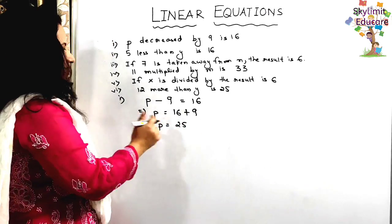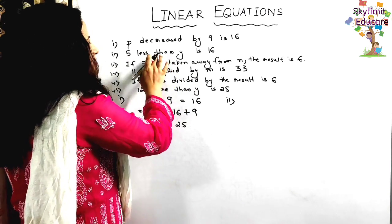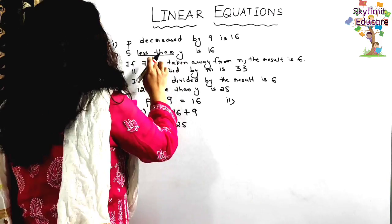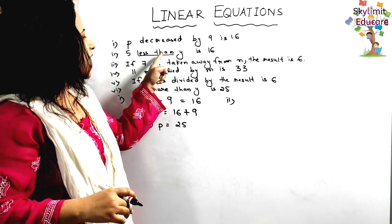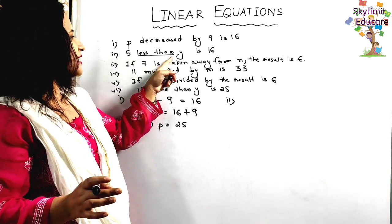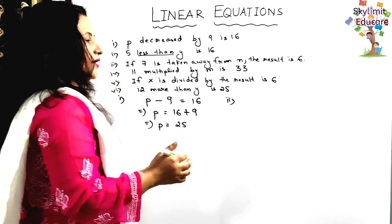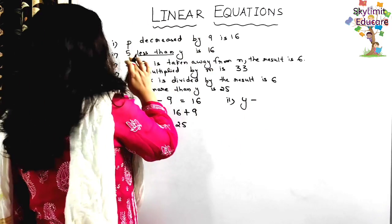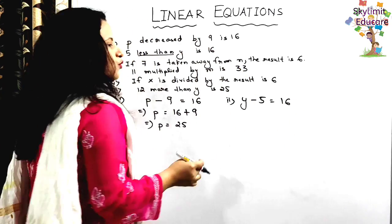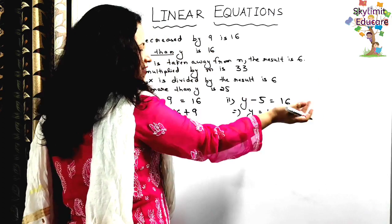Statement 2: '5 less than y is 16.' When you see 'less than', the number after 'less than' is the minuend and the number before is subtracted. So 5 less than y means y minus 5 equals 16. Shift minus 5 to the right — becomes plus 5. So y equals 16 plus 5 equals 21.